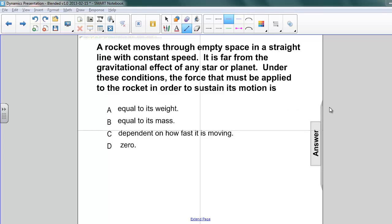Here's our fourth question. A rocket moves through empty space in a straight line with a constant speed. It's far from the gravitational effect of any star or planet.